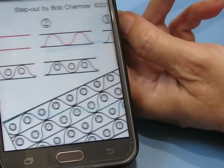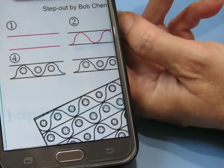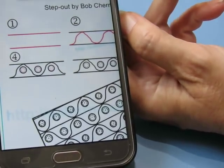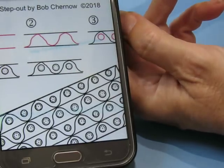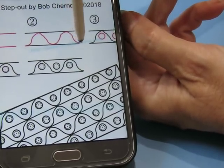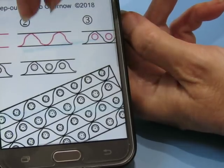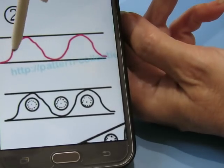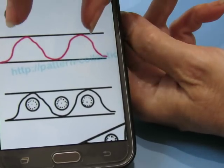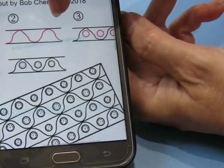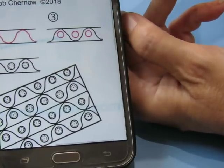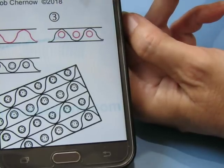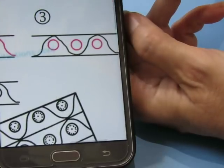So this one's a step out by Bob Cherno 2018 beginning with parallel lines. Inside those parallel lines we're going to do this kind of a shape. I don't know if it's on purpose or not but you'll notice that this isn't a nice smooth shape. It's sort of wobbly. I don't know if that's just the creator's hand or if it's supposed to have a little bit of a jiggle to it.